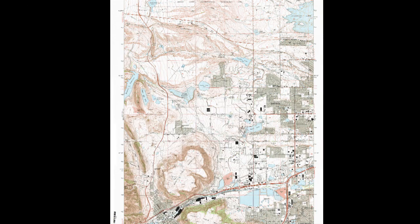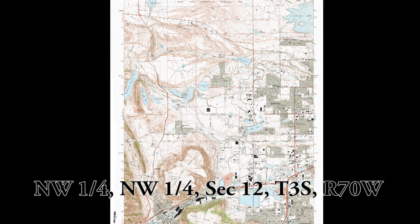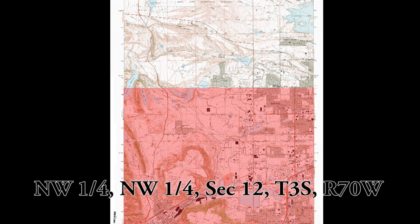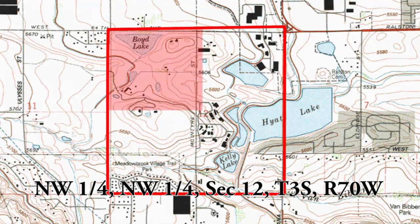Or we can do this the other way — tell me what is located at this PLSS designation: northwest quarter of the northwest quarter of section 12, Township 3 South, Range 70 West. It's easiest to start from the large: this is the section of the map that is in Township 3 South, Range 70 West, section 12, and the northwest quarter, and the northwest quarter — and that is Boyd Lake.